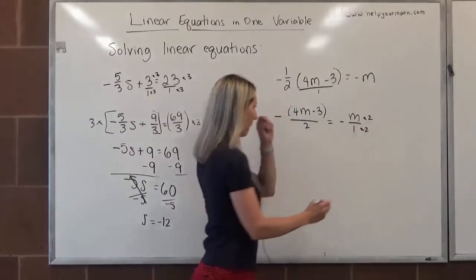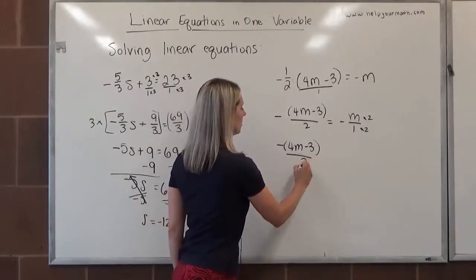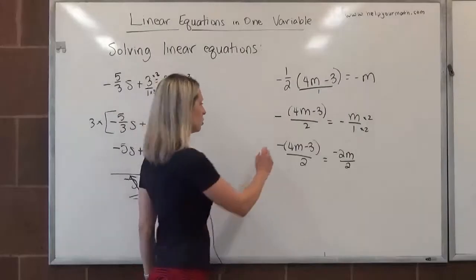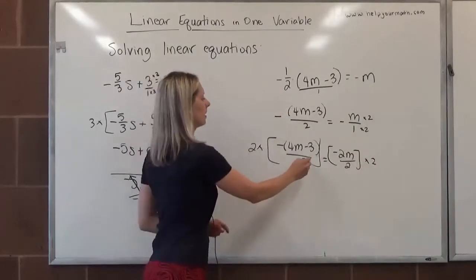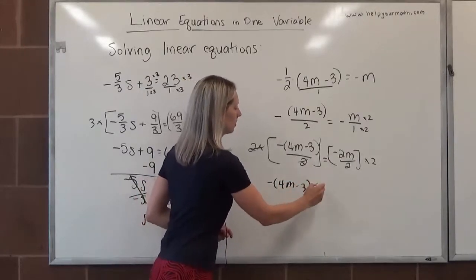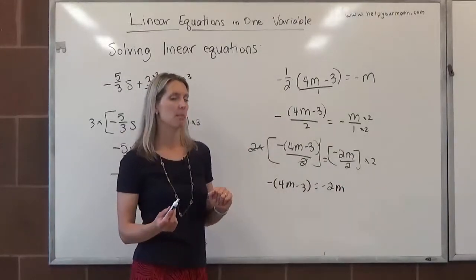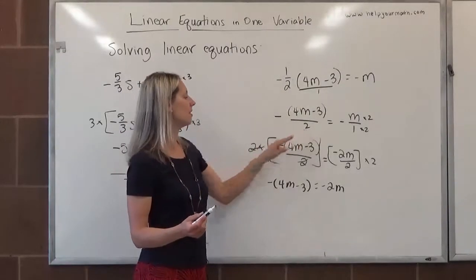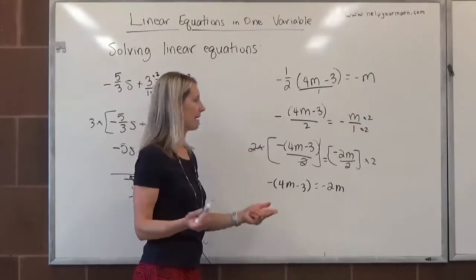Here we're going to multiply by 2 over 2. That would give me negative 4m minus 3 over 2 equals negative 2m over 2. From here, we can multiply both sides by 2. That will cancel out the denominator. We're left with negative 4m minus 3 equals negative 2m. This whole time, I've been very careful about this negative sign and keeping the parentheses in the problem. I don't want to have it in the denominator because then I wouldn't have a denominator of 2. I would have a denominator of negative 2, which would be problematic later on.